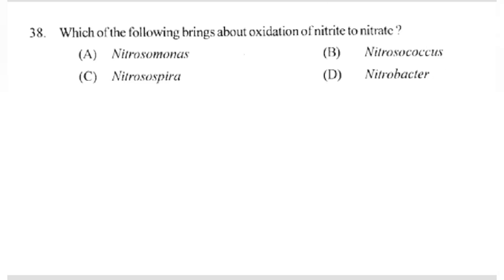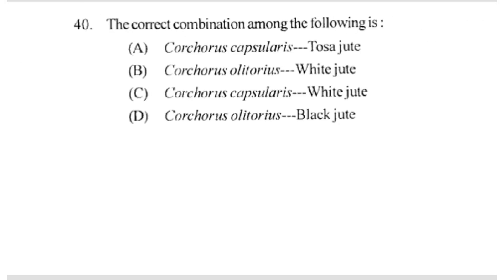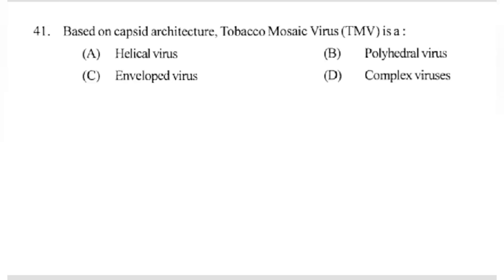Which of the following brings about oxidation of nitrite to nitrate? The answer is D part: Nitrobacter. Botanical name of bread wheat is — answer A part: Triticum aestivum. The correct combination among the following is — answer C part: Corchorus capsularis, White jute. Based on capsid architecture, Tobacco mosaic virus is — answer A part: helical virus.